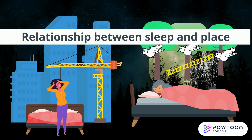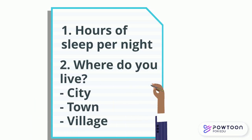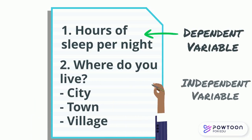Let's imagine we're looking at the relationship between how urban the place you live is and the amount of sleep you get per night. We decided to run an ANOVA or a Kruskal-Wallis where our dependent variable is average number of hours slept per night and our independent variable is the type of place you live, split into city, town and village.